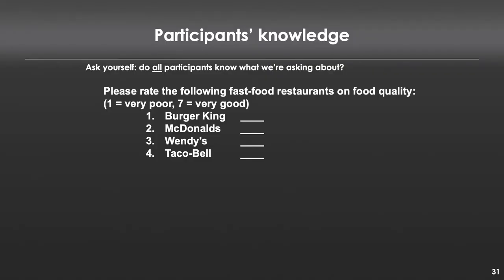Another thing to consider is the knowledge your participants have. You might ask a question that seems innocuous, like: 'Please rate the following fast food restaurants on food quality from one to seven.' But you're assuming participants have actually gone to those restaurants and eaten there — that's a strong assumption. As soon as participants lack the knowledge to answer a question, you're going to get garbage data. They'll respond, but their response will be meaningless, and you as a researcher will never know that — you'll just assume it's truth.